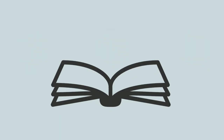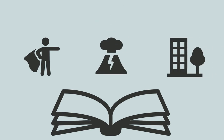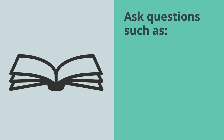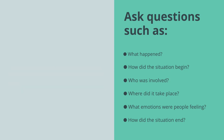Another approach to reflective writing is the narrative approach. A narrative approach asks you to think about elements of an experience as elements of a story — for example, characters, events, or settings. Ask questions such as: What happened? How did the situation begin? Who was involved? Where did it take place? What emotions were people feeling? And how did the situation end? As you can see, these types of questions can easily be integrated into the LEARN Framework too.